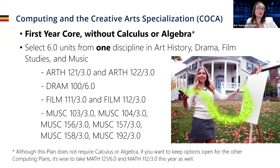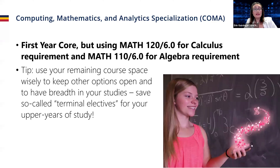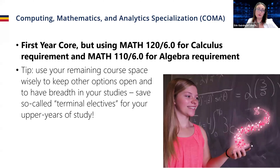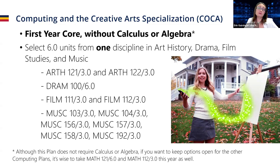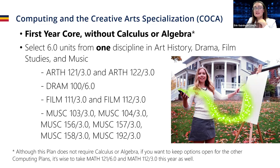The computing and creative arts specialization, or COCA, is a slightly different plan. One important note on COMA: you don't get automatic acceptance because it is joint with the math and stats department — we accept on our end and they have to accept on their end as well. Same thing with computing and creative arts — we partner with the other department, accept on our end, then contact the respective department to confirm. So it's slightly different when it comes to plan selection.